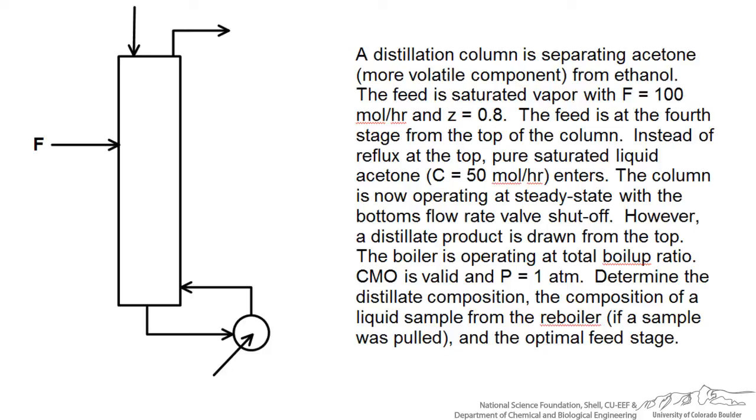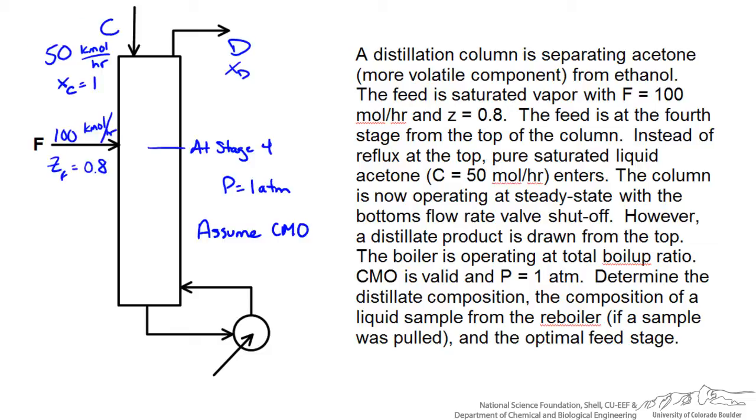The column is operating at steady state and the bottom is shut off. We are told everything that goes into the boiler is being boiled up into the column, and we are asked to determine the distillate composition, the composition of a liquid sample from the reboiler, and the optimal feed stage. Let's start with labeling our diagram with known information. We will assume constant molar overflow for our distillation.